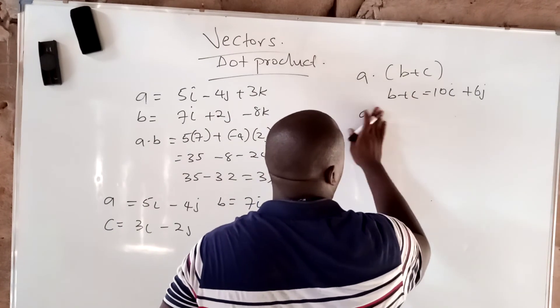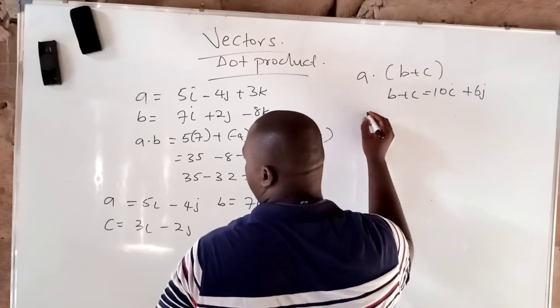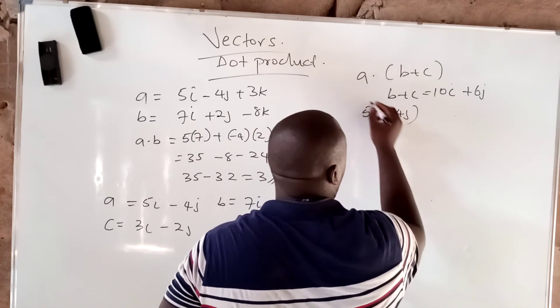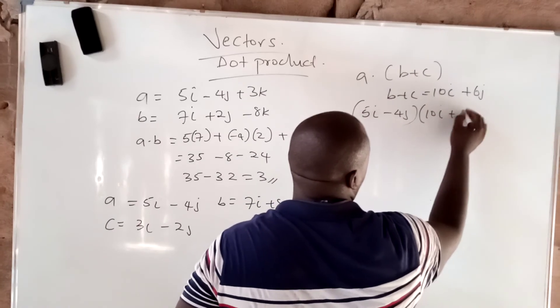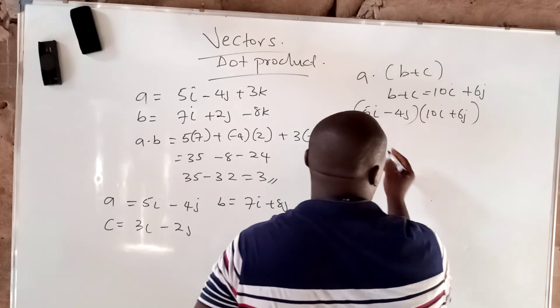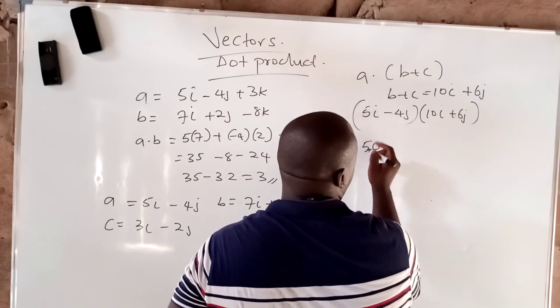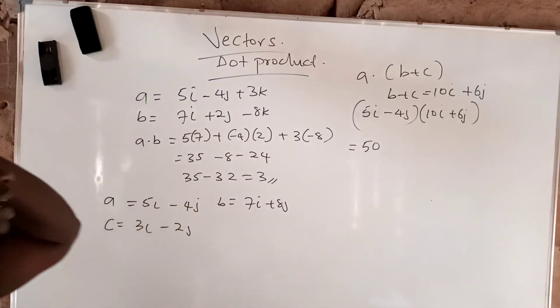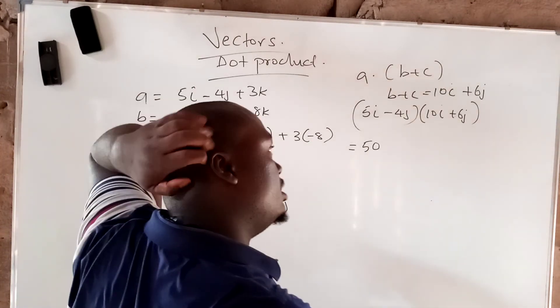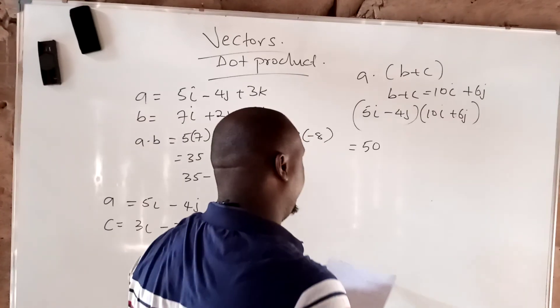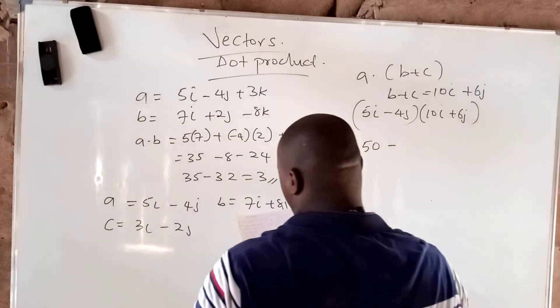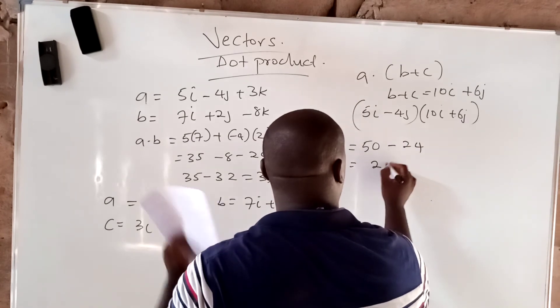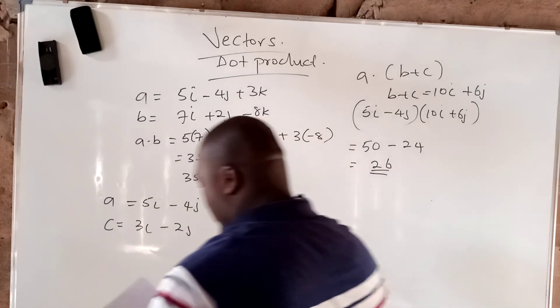This will be a dot this. That means your a is 5i minus 4j, all in bracket, times 10i plus 6j. This will give you 50, and then minus 4j times 6j should give you minus 24.